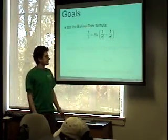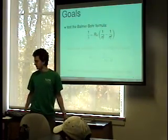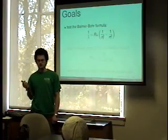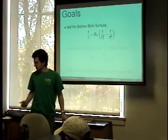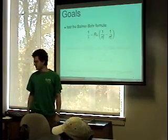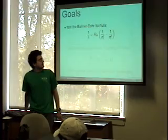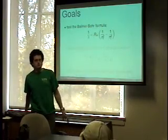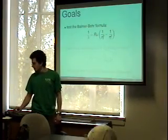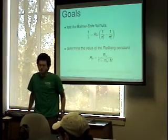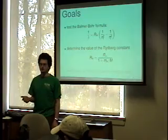The goals of the part of the experiment that I'm presenting are to test the Balmer formula for a prediction of what wavelengths the spectrum of hydrogen will peak at. This formula says that one over the wavelength is equal to a constant called the Rydberg constant times one over the final principal energy level squared minus one over the initial principal energy level squared.